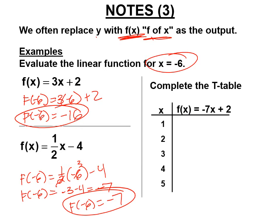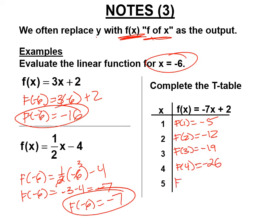Let's complete a t-table for f(x) = -7x + 2. f(1) = -7(1) + 2 = -5. f(2) = -7(2) + 2 = -12. f(3) = -7(3) + 2 = -19. f(4) = -7(4) + 2 = -26. f(5) = -7(5) + 2 = -33. Notice: if there's a pattern in the inputs, there will be a pattern in the outputs.